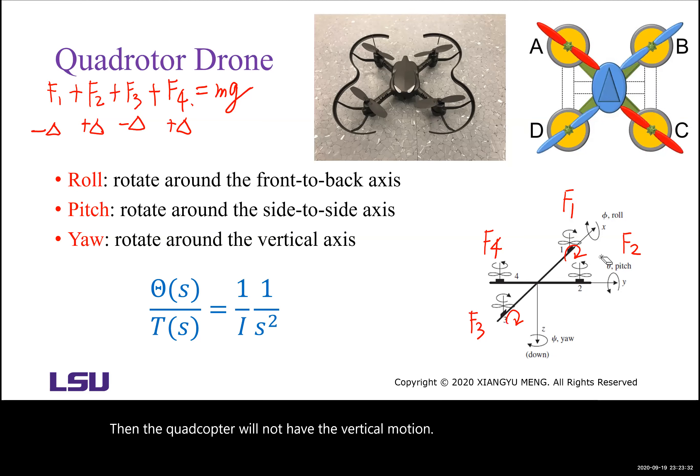Because Rotor 2 and Rotor 4 are rotating in the counterclockwise direction, if we increase the rotational speed of the rotors,